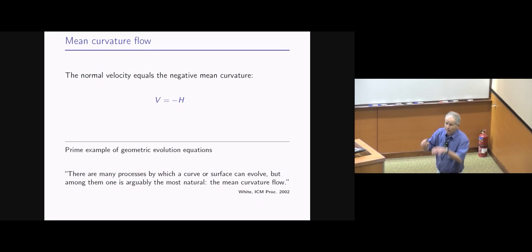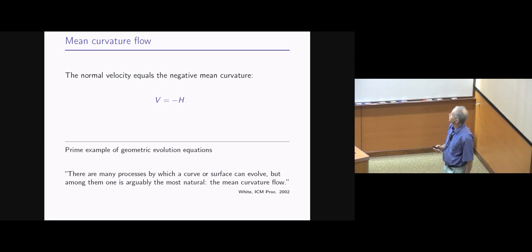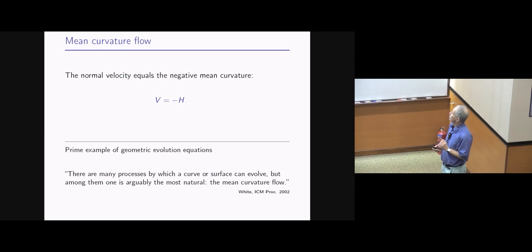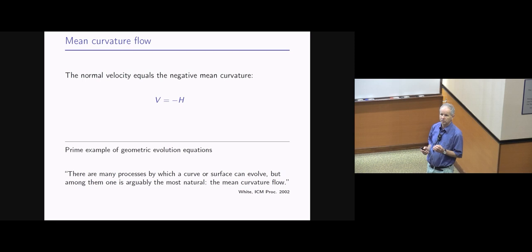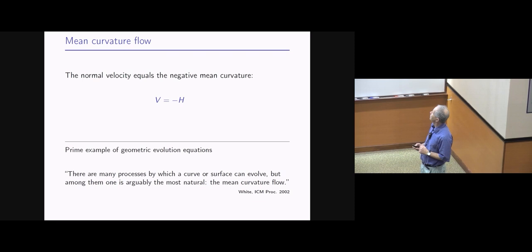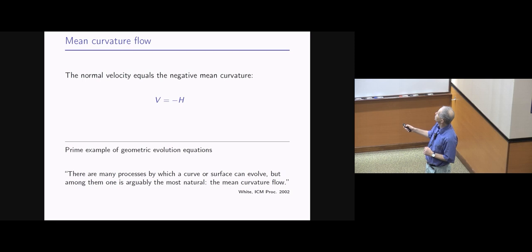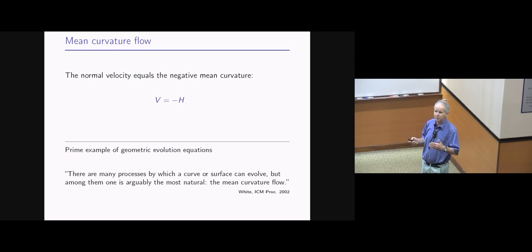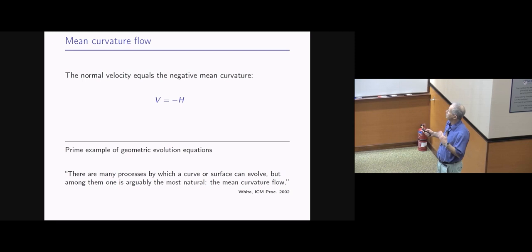So what is mean curvature flow? Imagine a two-dimensional closed surface. To describe the motion of the surface, you prescribe the normal velocity at every point. Mean curvature flow says that the normal velocity should equal the negative mean curvature. The mean curvature H is the sum of the two principal curvatures on the surface. So the equation is simply V equals negative H.